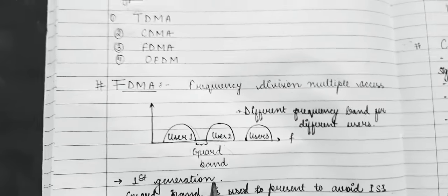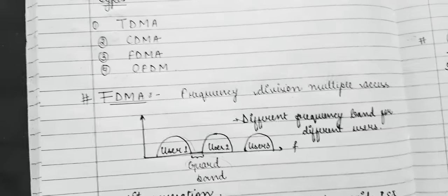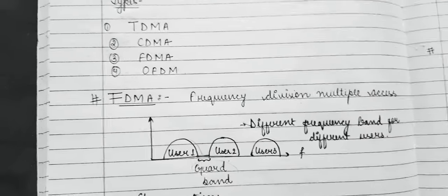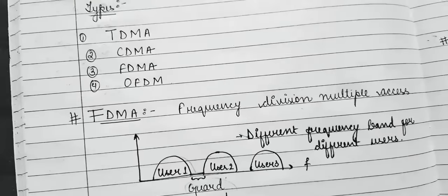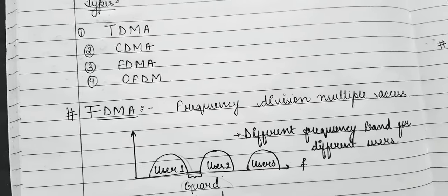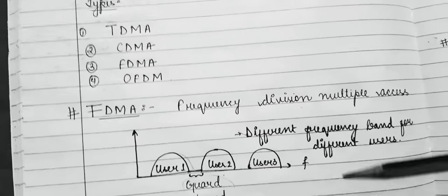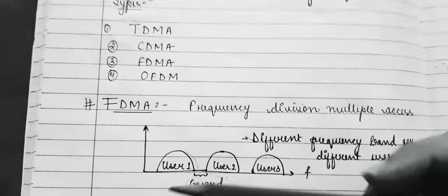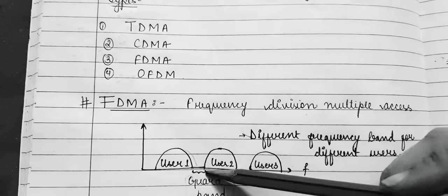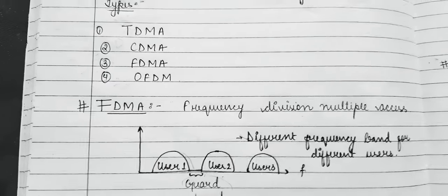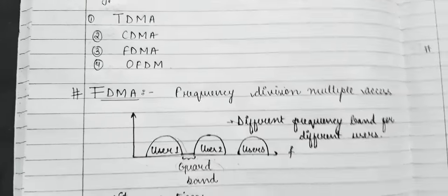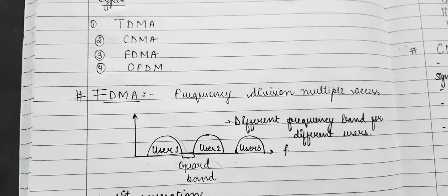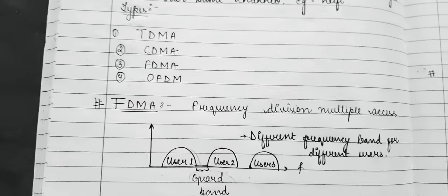The guard band reduces bandwidth efficiency. The FDMA technique is a first generation (1G) technique, where first generation data transmission is done. The bandwidth per user is less, which means the data rate will also be less.